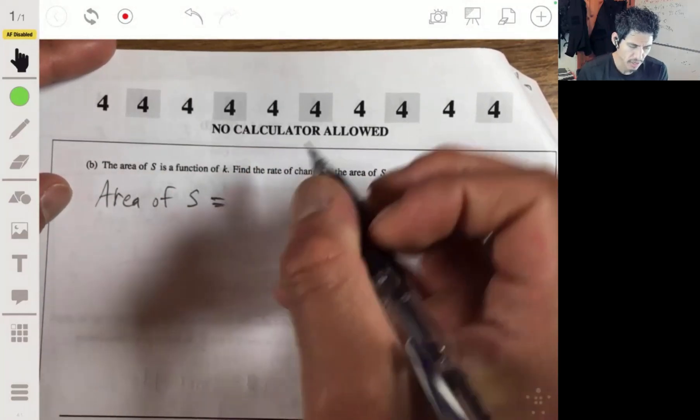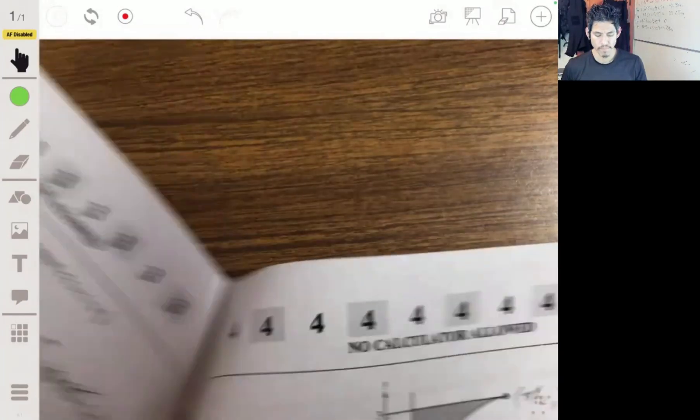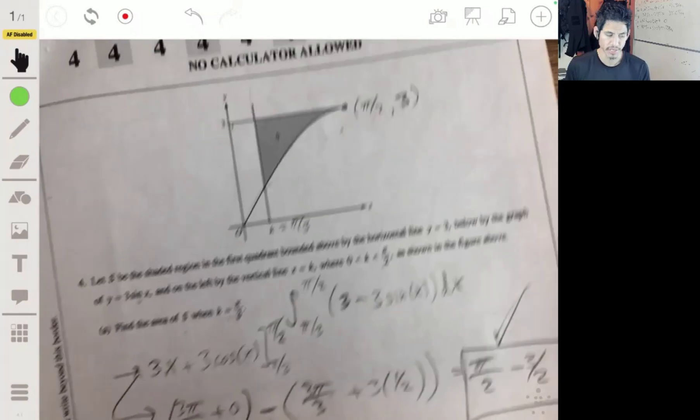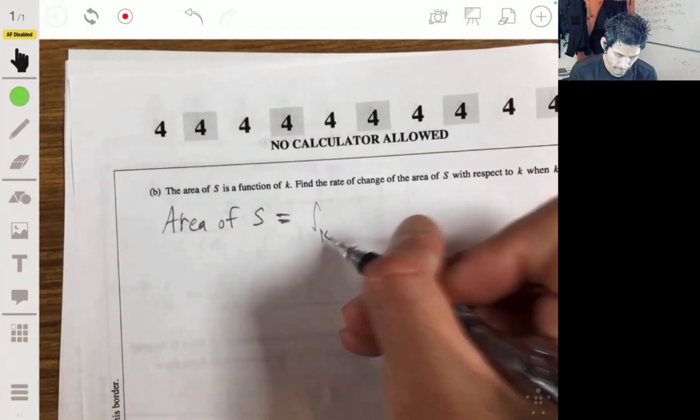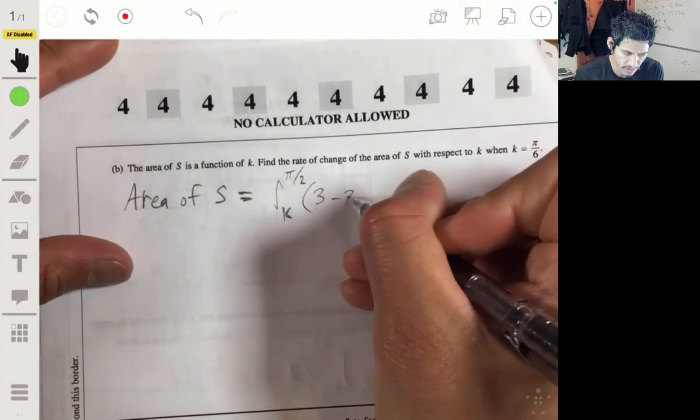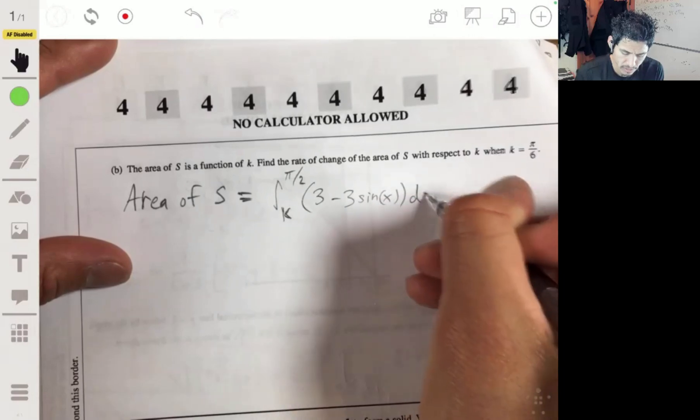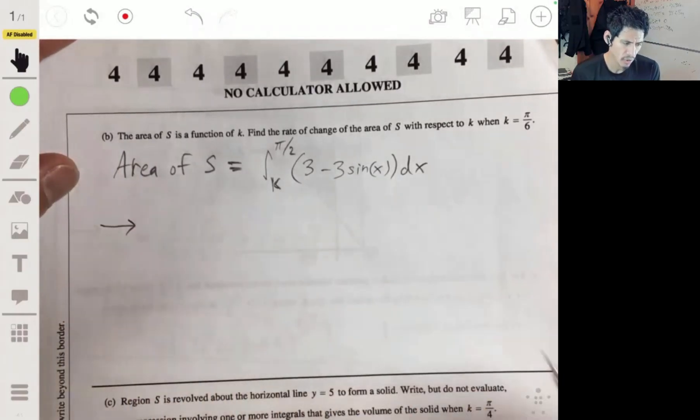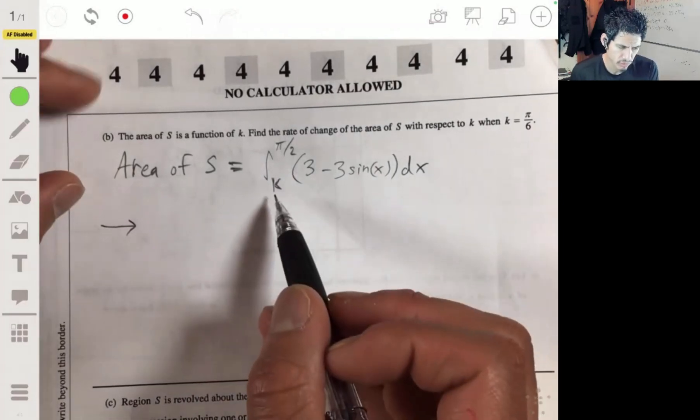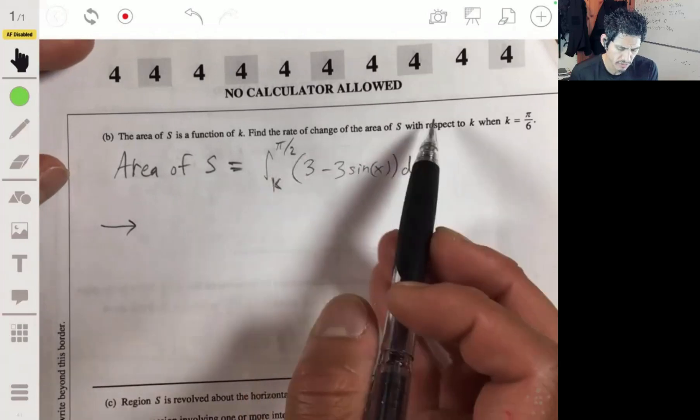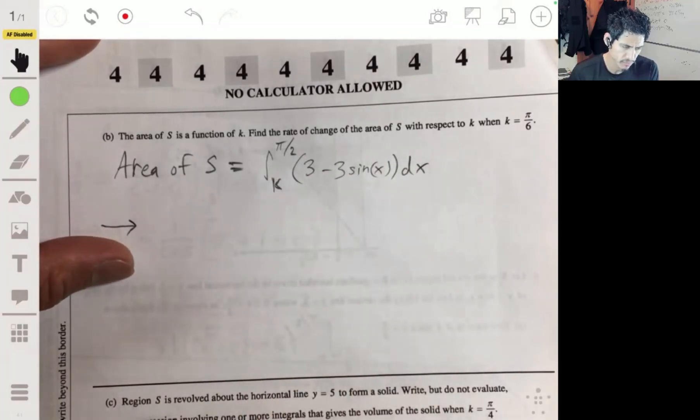The area of S, it's the integral from k to pi over 2. And last time we just made k pi over 3, but in general, we would be integrating from k to pi over 2, same integrand, 3 minus 3 times the sine of x dx. Now, I'm going to find the rate of change of S with respect to k when k equals 5 or 6.